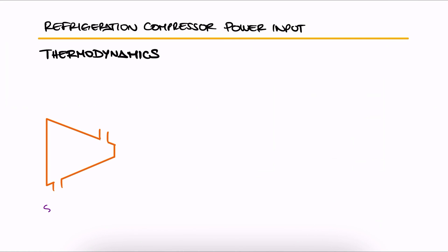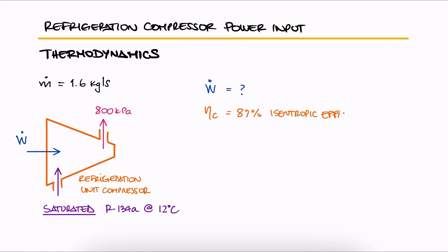Saturated R134A vapor at 12 degrees Celsius is compressed by a refrigeration unit to 800 kPa. How much power is required to compress 1.6 kilograms per second of refrigerant with a compressor efficiency of 87%?